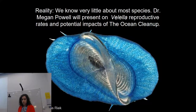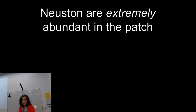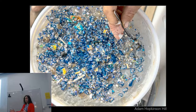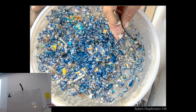I've now done some preliminary sampling in collaboration with Vortex Swim, an organization raising awareness about ocean plastics. What we're finding is that neuston are extremely abundant in the North Pacific subtropical gyre. Here's a neuston sample — you can see particles of plastic in here, but every little blue ring is a Valella.